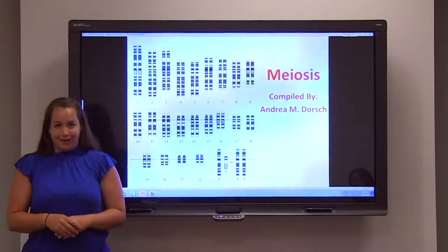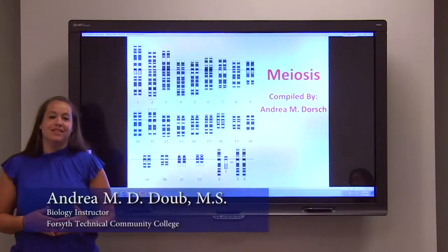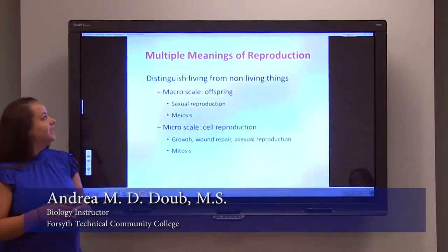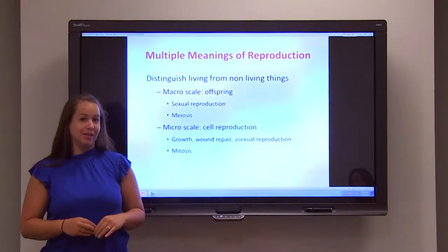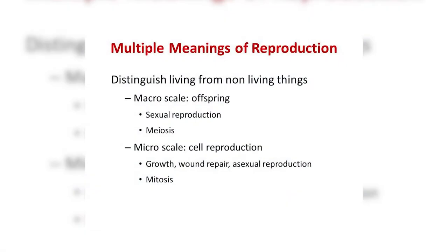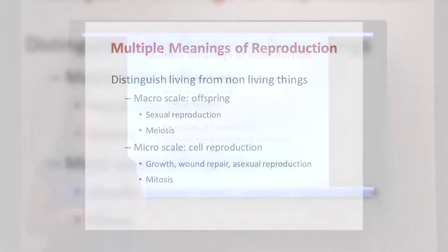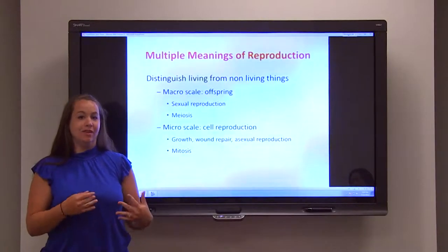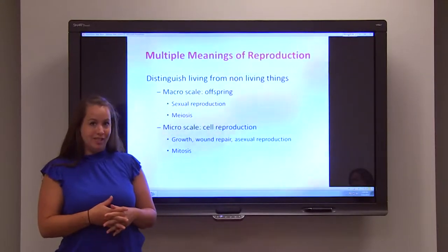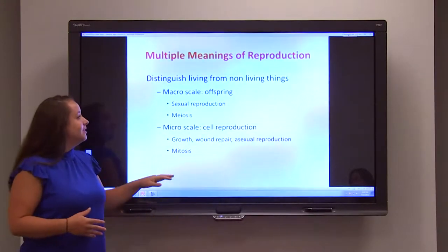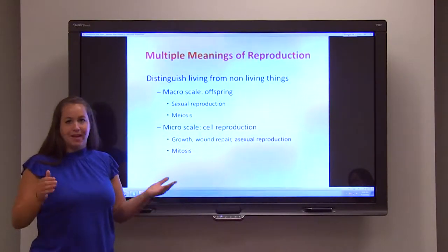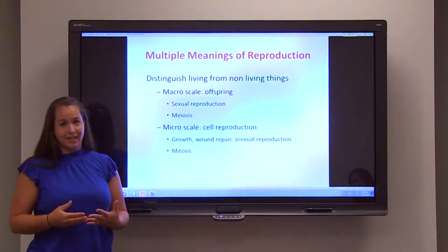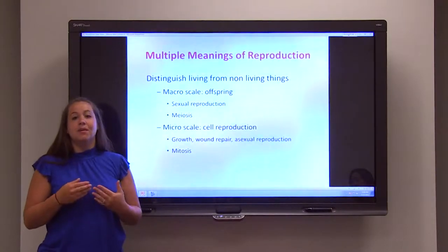Now that we've gone over the process of mitosis, we are going to look into the process of meiosis. Remember that earlier we discussed reproduction on two different levels: the macro scale and the micro scale. We went through the micro scale and the process of mitosis — how you start off with one cell and create two identical daughter cells, and how this functions in growth, wound repair, and asexual reproduction. But what we didn't go into was the macro scale — how people make more people, how trees make more trees, the production of offspring. And this is accomplished with a process known as meiosis.